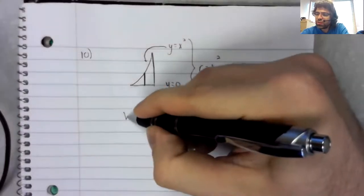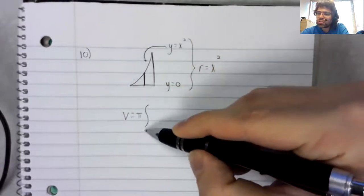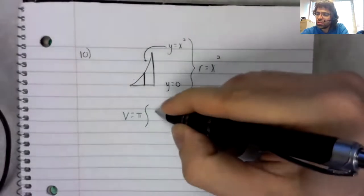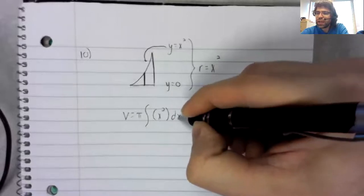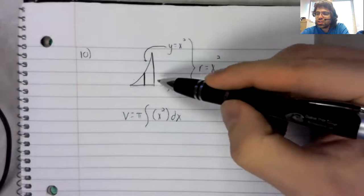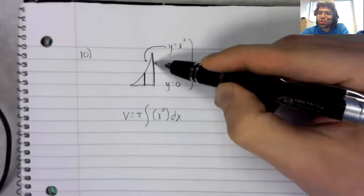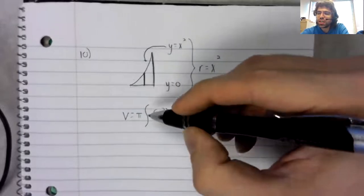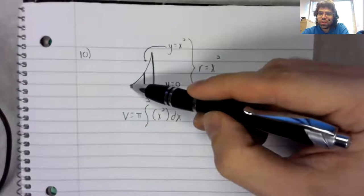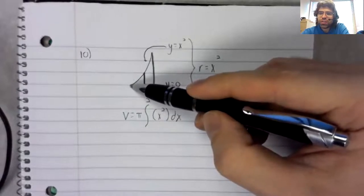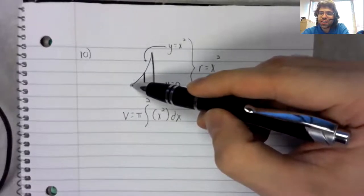So, the volume is pi times the integral. I'll look for the limits of integration in a moment of the radius squared. Let's see. We're explicitly told that two is the right hand bound. We are not explicitly told this, but if you graph it, you can very quickly see that this region starts at 0.